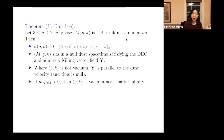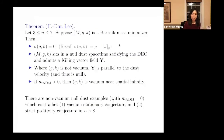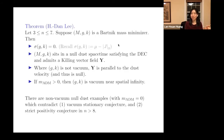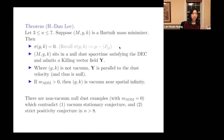In studying these properties we actually find counter-examples: there are non-vacuum no-dust examples consistent with our theorem that are Bartnik mass minimizers. In other words, these would contradict the vacuum stationary conjecture and the strict positivity conjecture. However, this only occurs in dimension n greater than 8. Bartnik originally proposed his conjectures only in three dimensions for physical reasons, and in lower dimensions we still don't know whether the result can be improved.